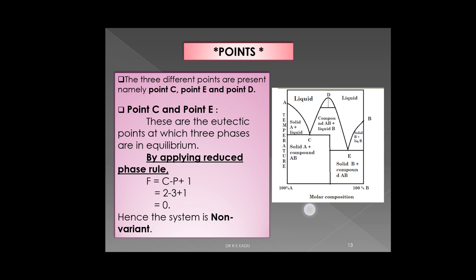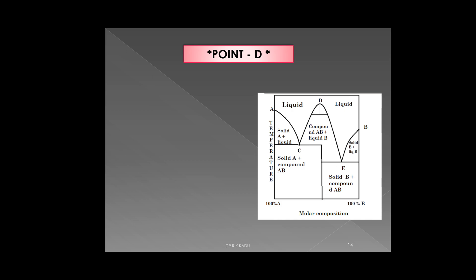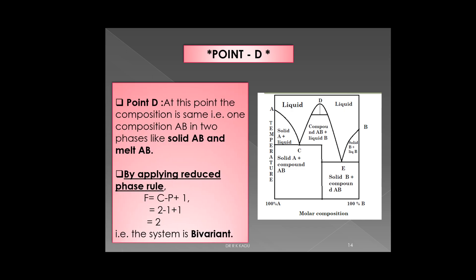One point remains — point D. At this point, the composition is the same, meaning one composition AB exists in two phases: solid AB and melt AB. Applying the reduced phase rule: F = C − P + 1 = 2 − 1 + 1 = 2. Since F = 2, the system is bivariant.